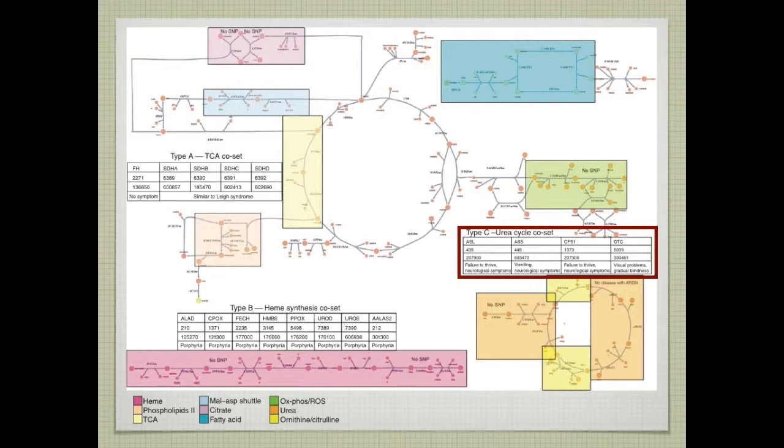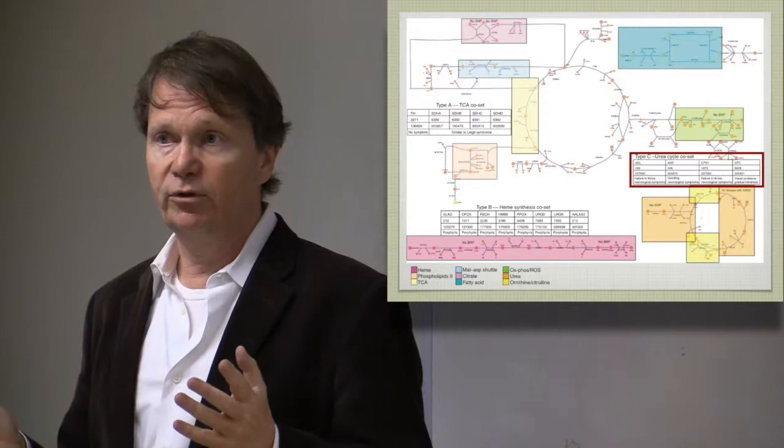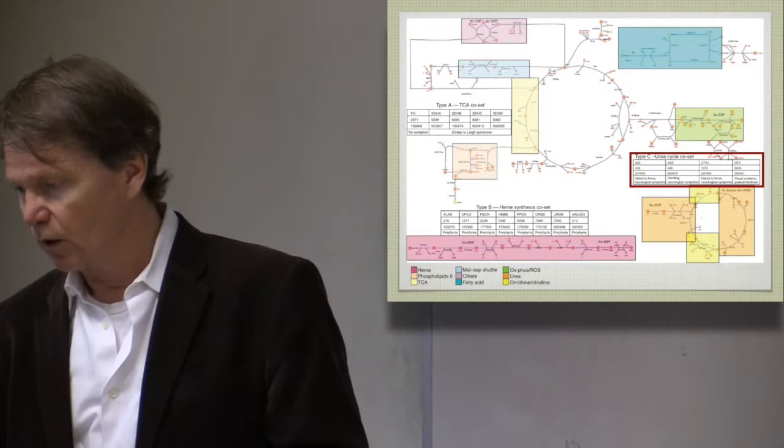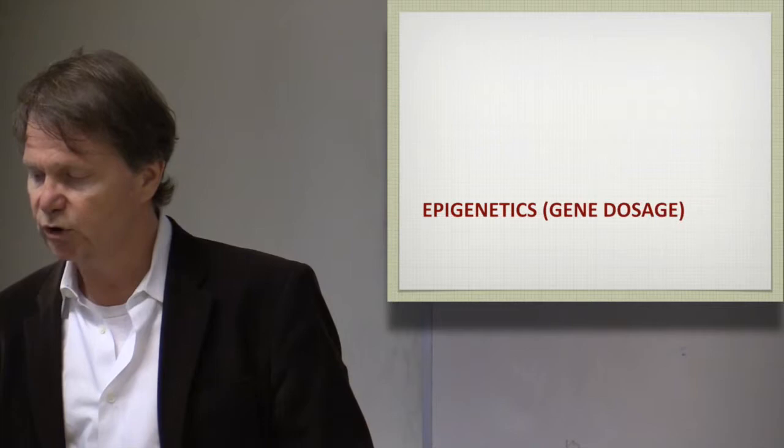And then there is this discontiguous co-set here of type C that is associated with the urea cycle. And mutations in these genes have been associated with mental retardation due to problems during development. The brain is very sensitive to metabolic imbalances as it develops. So this is one way of trying to correlate genetic parameters, SNPs, through network properties.